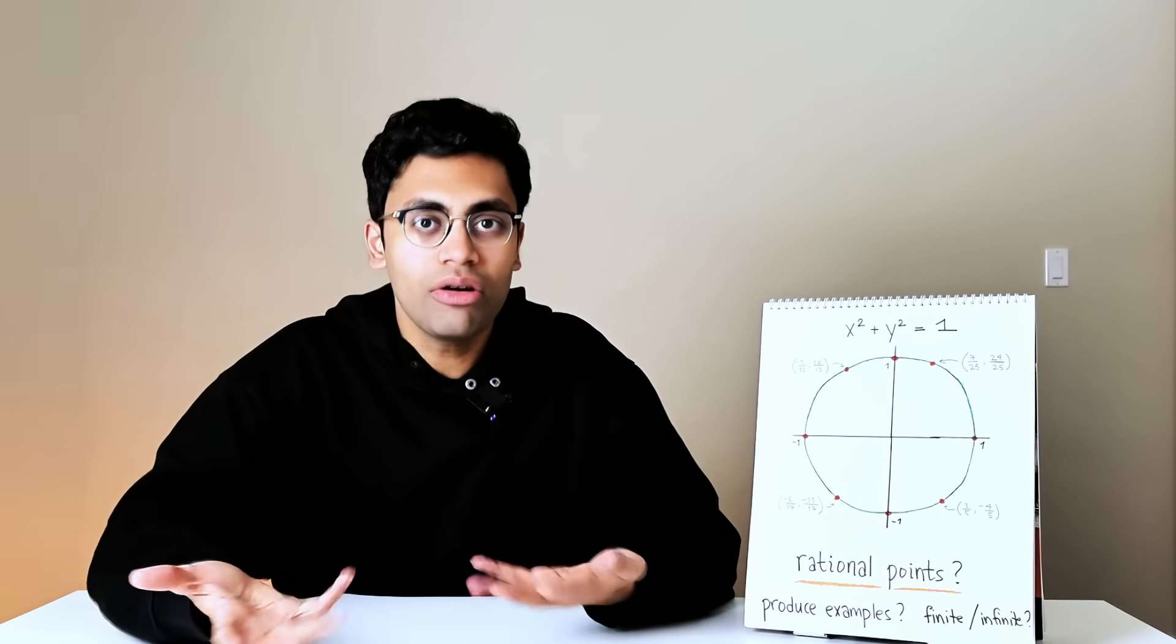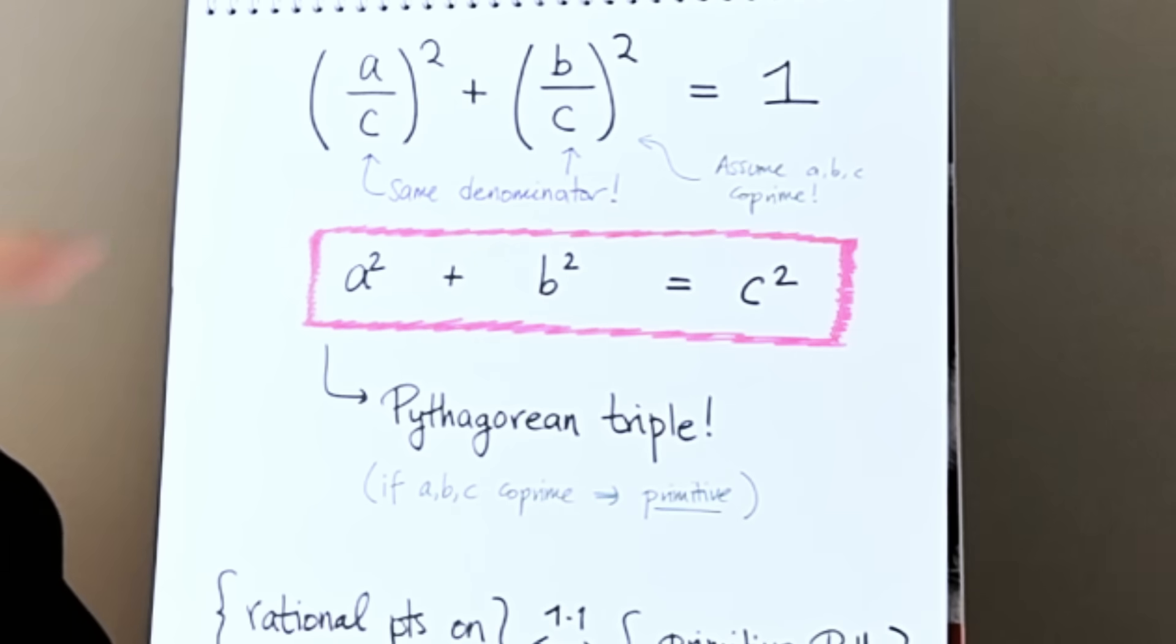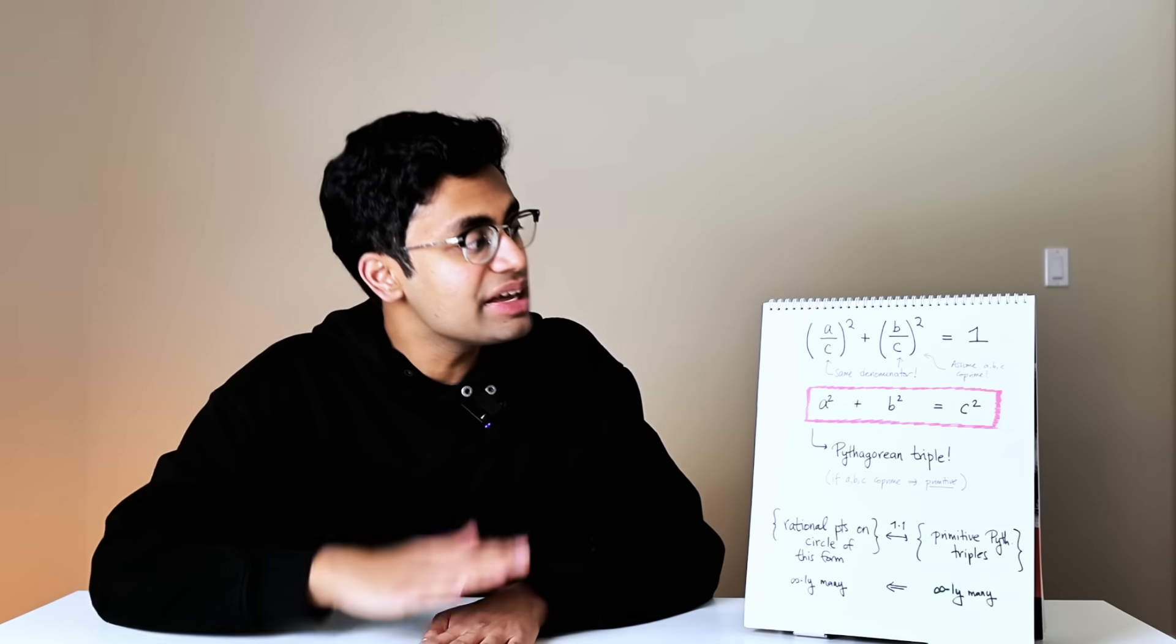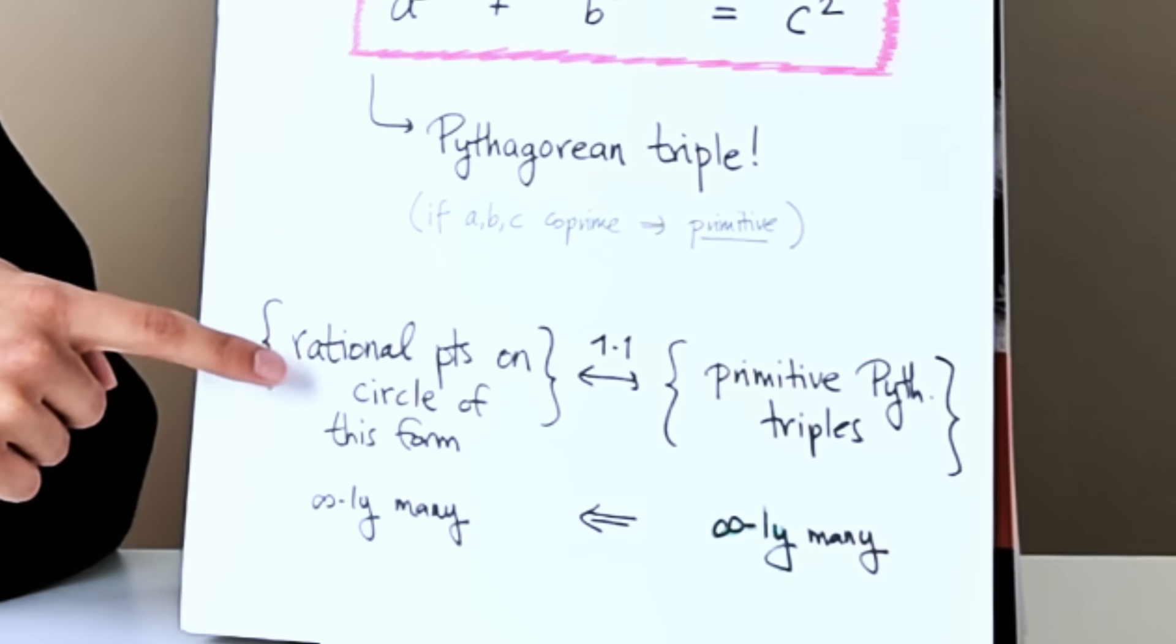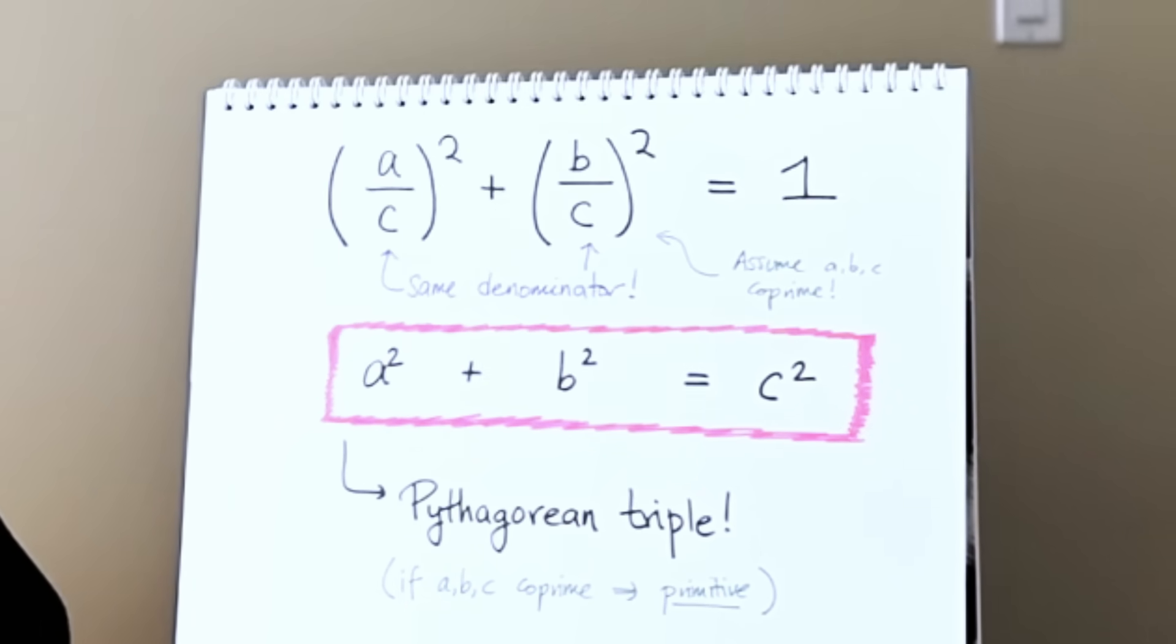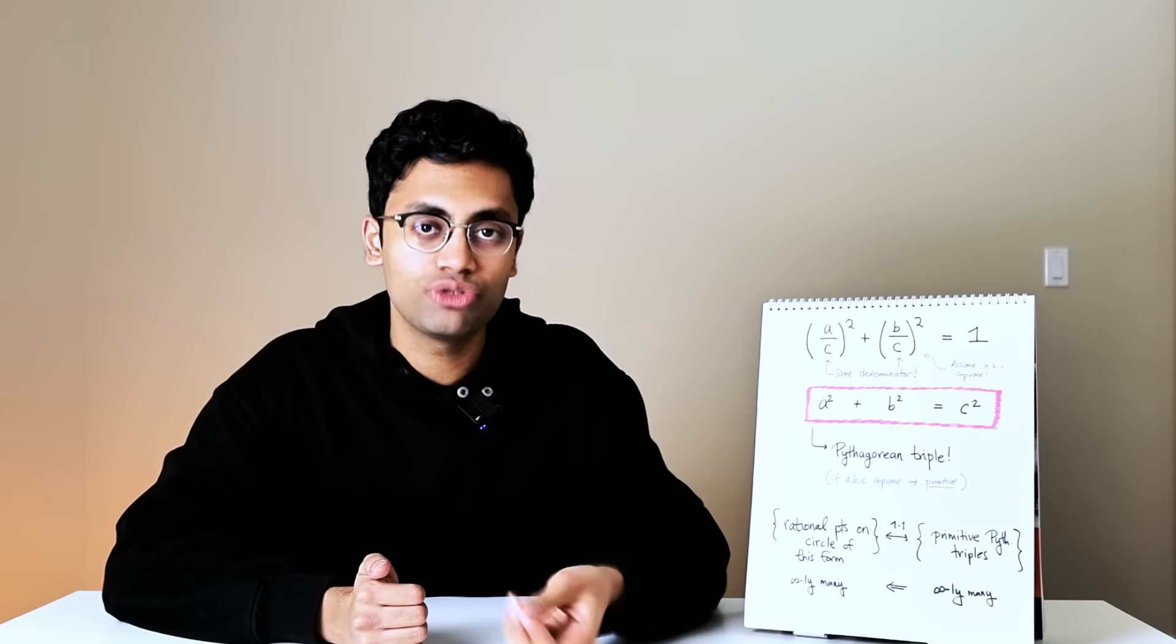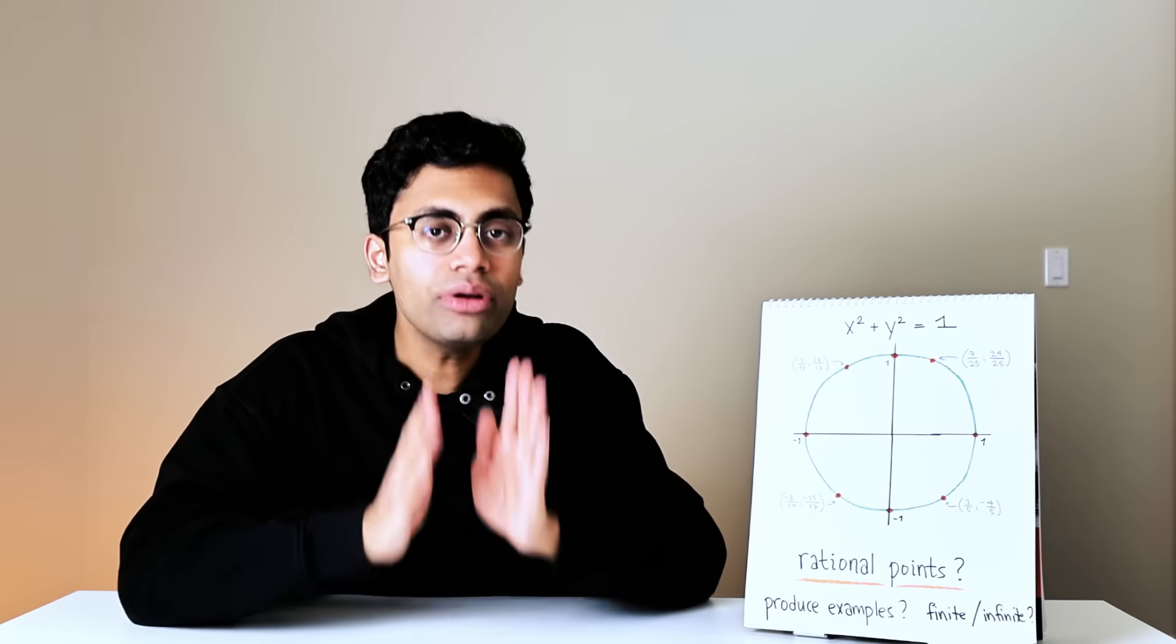When we look at these, a few questions come to mind: how do you produce these examples, and are there finitely many or infinitely many rational points on the circle? It turns out there's an easy trick. If you have a rational point a over c comma b over c on the circle, and multiply through by the denominator, you get a squared plus b squared equals c squared - a Pythagorean triple. There's a one-to-one correspondence between rational points on the circle and primitive Pythagorean triples. Since there are infinitely many Pythagorean triples, there are infinitely many rational points on the circle.